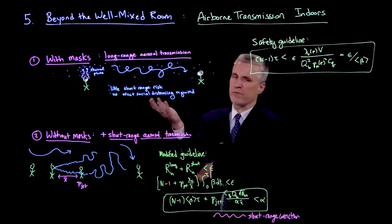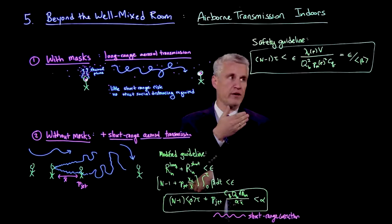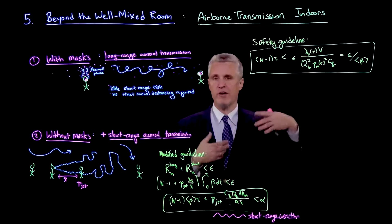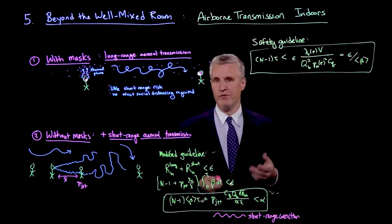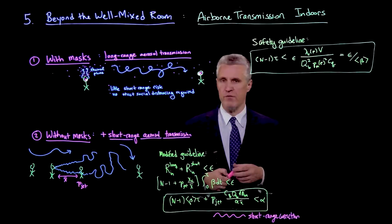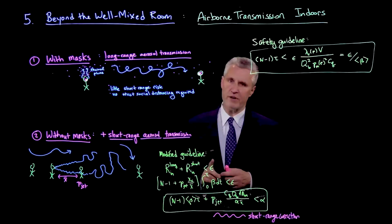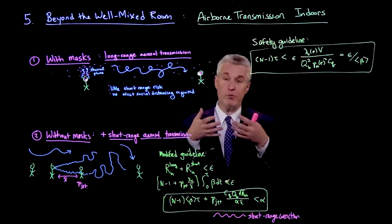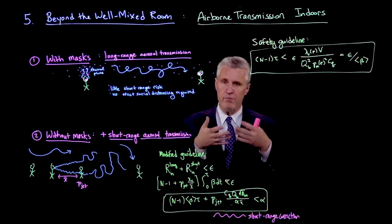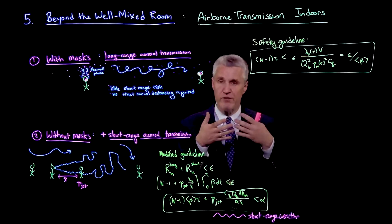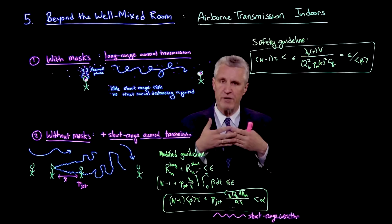So first of all, when masks are worn, we've already discussed the filtering effect of masks. We've talked about how that brings a squared factor of the mask penetration factor, which leads to a very substantial increase in the reduction in the transmission rate. But there's another important factor. When you have a mask, even a fairly poor cloth mask that may not be so great at blocking aerosol particles, it's very good at blocking momentum. So the fluid momentum that comes from just normal breathing is almost completely stopped by a mask.